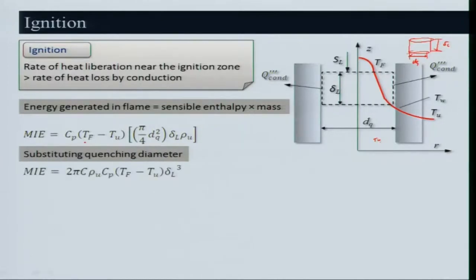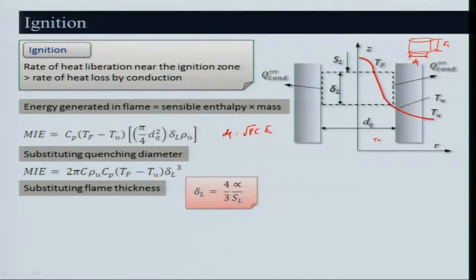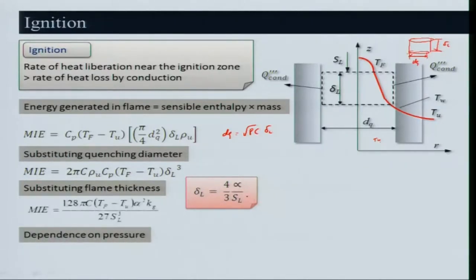Substituting d_q = √(8c) × δ_l into the minimum ignition energy expression, we get: M_i = 2π c × ρ_u × C_p × (T_f − T_u) × δ_l_q. Then substituting δ_l = (4/3)(α/S_L), we get M_i proportional to α/S_L × (T_f − T_u) × k_g.